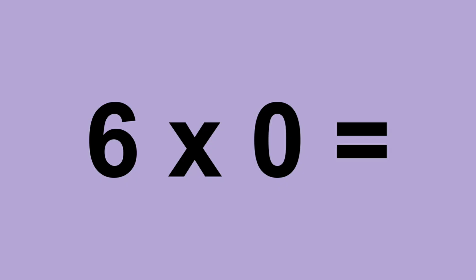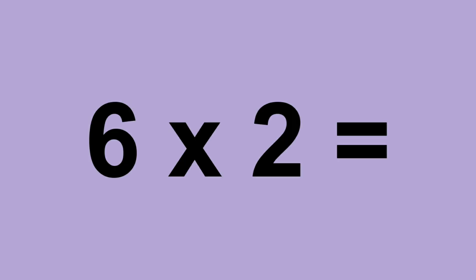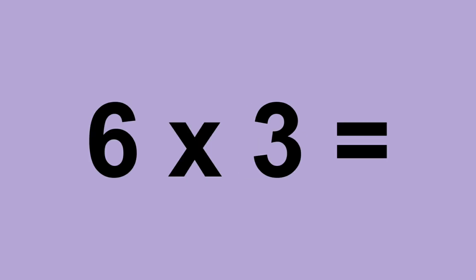6 times 0 equals 0. 6 times 1 equals 6. 6 times 2 equals 12. 6 times 3 equals 18.